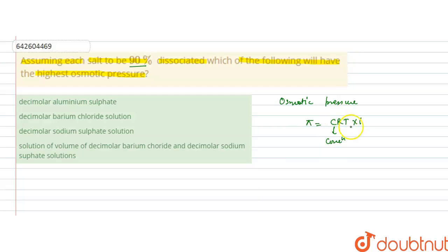Osmotic pressure, π, equals CRT times I, where C is the concentration, R is the gas constant, T is the temperature, and I is the van't Hoff factor.